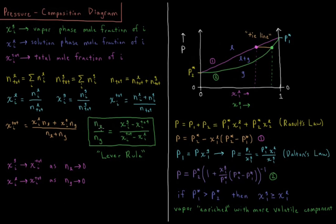The total number of moles of liquid divided by the total number of moles of gas equals the mole fraction of i in the gas minus the total mole fraction of i, divided by the total mole fraction of i minus the mole fraction of i in the liquid. This equation is sometimes called the lever rule, because if you cross-multiply it has a similar expression to balancing torques in introductory physics — balancing a ruler on a fulcrum with differing masses based on lever length — matching moles of liquid and gas to balance the differences in mole fractions relative to the total.